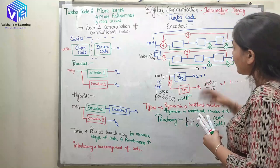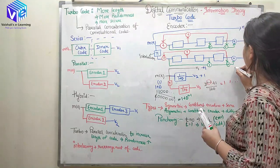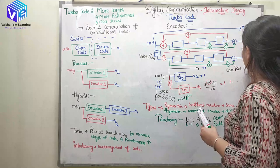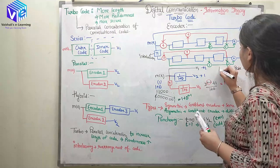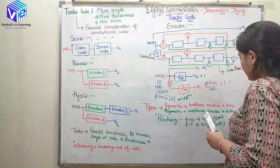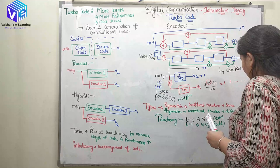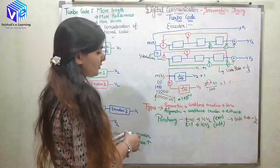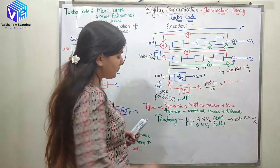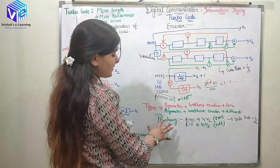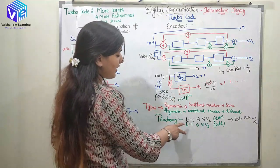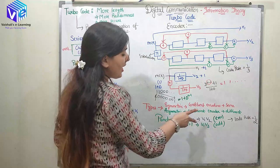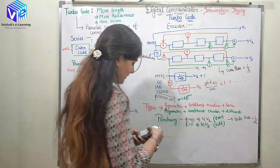Now why is puncturing required? The code rate is 1 by 3 with 3 outputs, but in the punctured case the code rate would be 1 by 2. With the help of the basic concept of puncturing I can change the code rate.